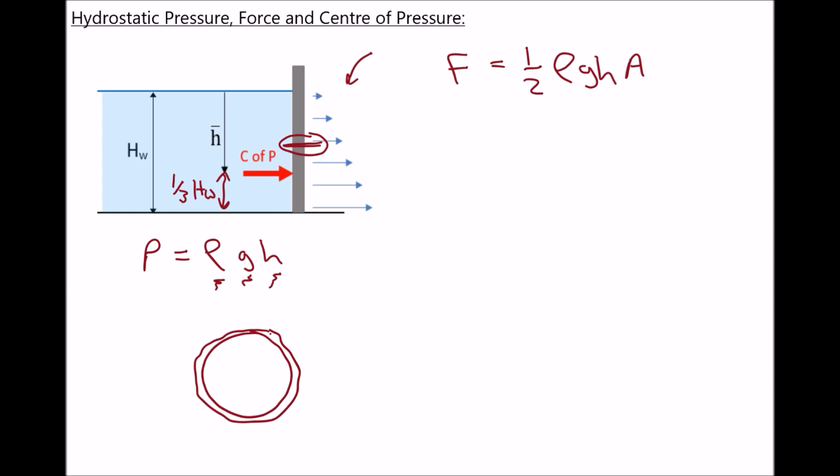The reason the centre of pressure is always below the centre line is because if we examine the effects of the pressure field above the centre line and compare it to the effects of the pressure field below the centre line, then the pressure field below the centre line is going to cause a greater turning moment, while the pressure field above causes a smaller turning moment. So we don't have static equilibrium if the force were to act at the centroid.